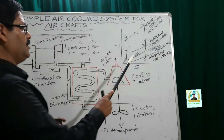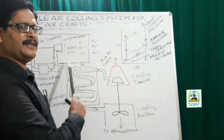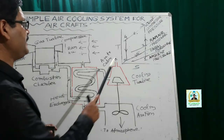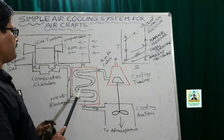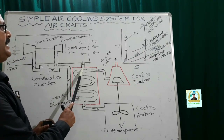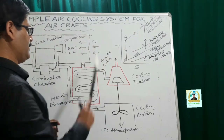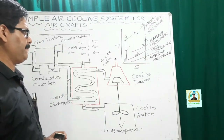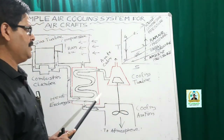Process 1-2 represents the ram compression taking place in the diffuser. Process 2-3 represents the compression taking place in the main compressor. Process 3-4 represents the heat transfer taking place in the heat exchanger.